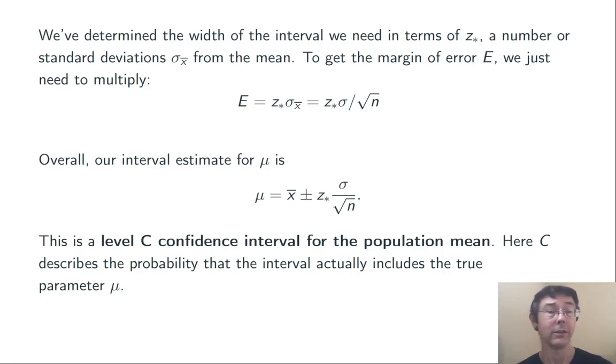x-bar is the sample mean, and z-star sigma over root n is going to be the margin of error, a certain number of standard deviations of the sample mean.